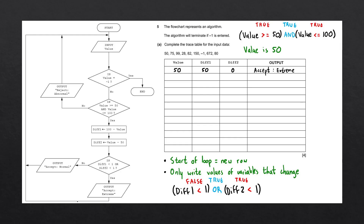We follow this arrow back to the top of our flowchart and restart the loop. The rule says that whenever we start the loop, we go to a new row. So when we input the next value, we write that value in the next row. We're repeating the input block and inputting a new value for the variable 'value'. The next one from our input data is 75, so 75 is assigned to the variable value. We write 75 underneath the value column.